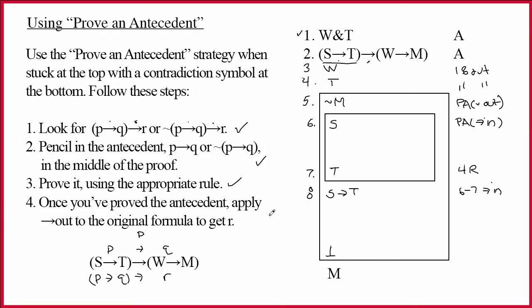But I put in this fourth step as a reminder. Why the heck did we do this? It was so that we could go back and do the arrow out on line two. Once you've proved the antecedent, apply arrow out to the original formula to get the R part. That was the whole point of doing this. And so on nine, we'll write W arrow M. And that will be two eight arrow out.